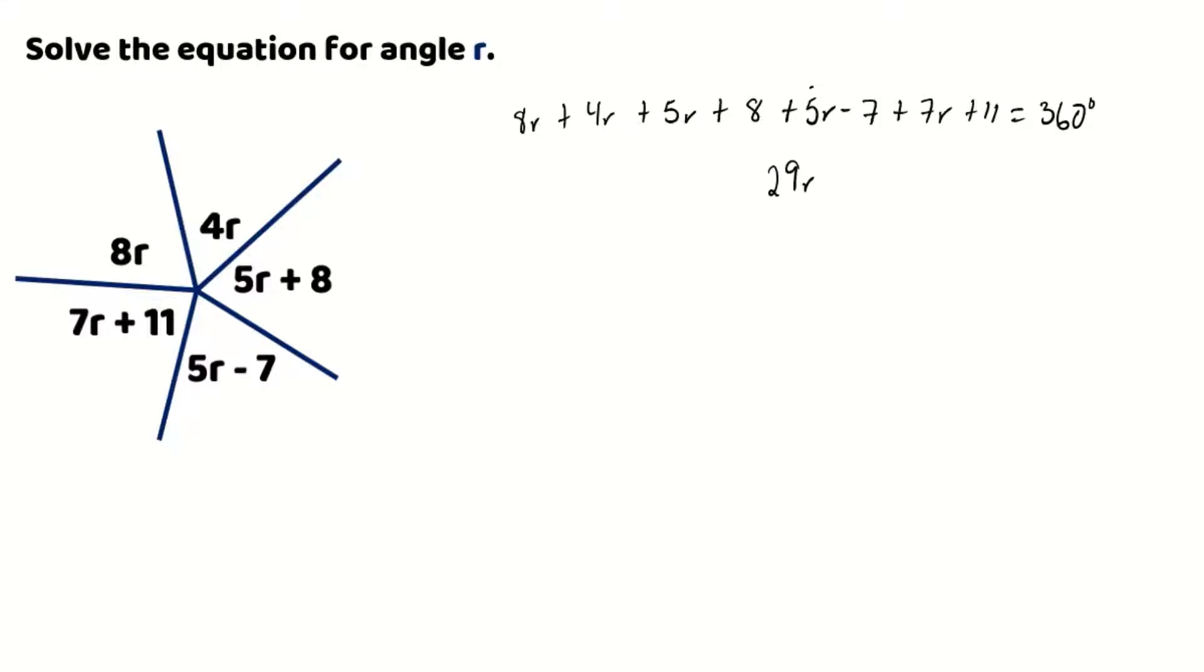And now we're going to calculate our constant. So we have negative 7, 8, and 11. So 8 minus 7 will leave us with 1, and 1 plus 11 will give us 12. So we now have 29r plus 12 which equals 360 degrees.